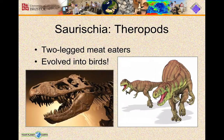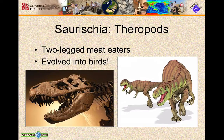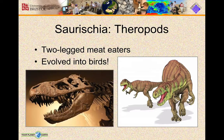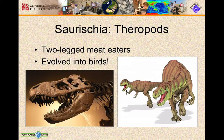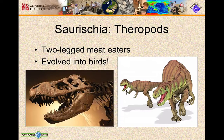Starting with the saurischians — the theropods — these were the two-legged, three-toed dinosaurs. They're the meat-eaters; all the meat-eaters belong to this group. And oddly, these are the dinosaurs that evolved into birds, even though these are the ones with the saurischian, the lizard or reptile hips. That's one of the reasons for the recent re-evaluation of the classification system of dinosaurs, although I should stress that it has not been widely accepted.